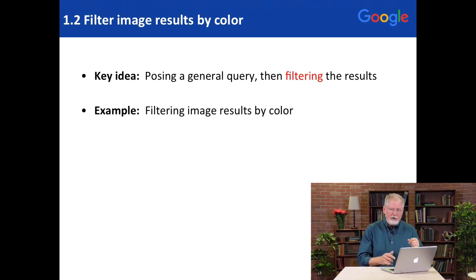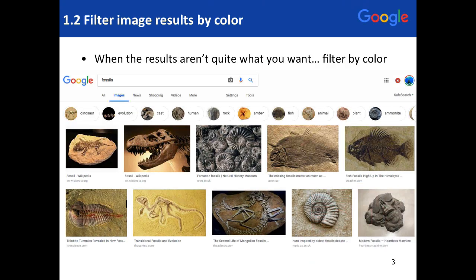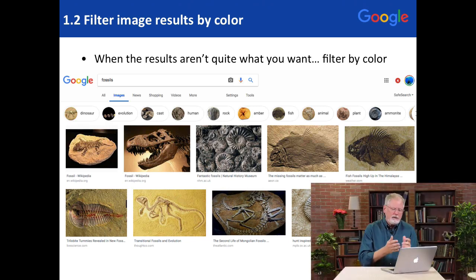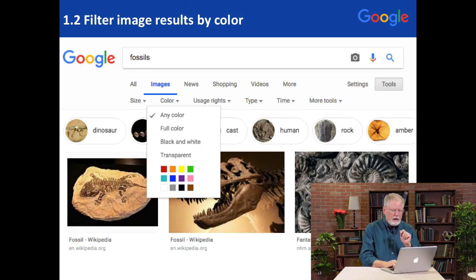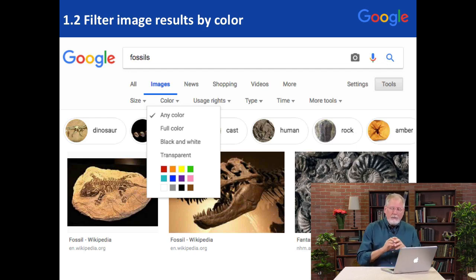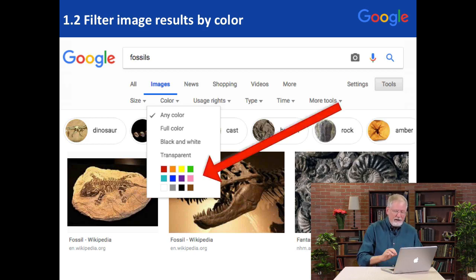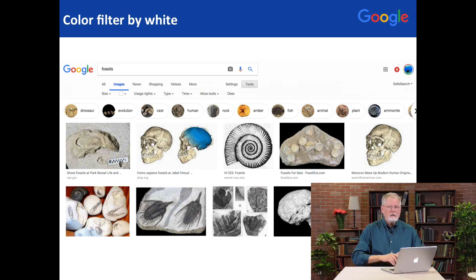Let's talk about filtering image results by color. You can go into Google Image Search and do a search for, say, fossils like this. But while these are nice fossils, maybe I want the whitish fossils — ones that are embedded in chalk or something. To do that, I'll click on the Tools option and then on the Color option. It pops up a set of options: full color, black and white, transparent, or a little color palette. If I click on the white palette chip, suddenly all of the images are whitish in color, primarily white.